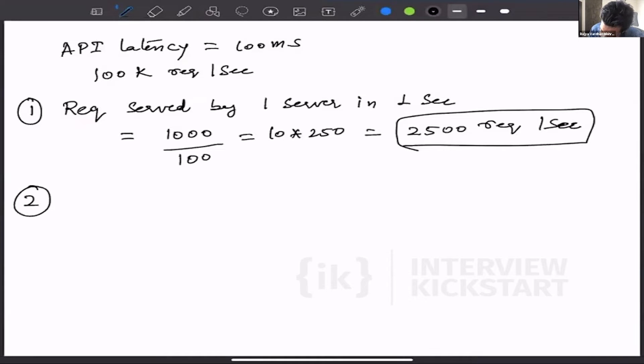Now we know that the requests per second which are expected are 100,000. So we just need to divide 100,000 by 2,500. This comes to 40. That means if my 40 servers run at 100% CPU capacity, then I am able to serve 100,000 requests per second.